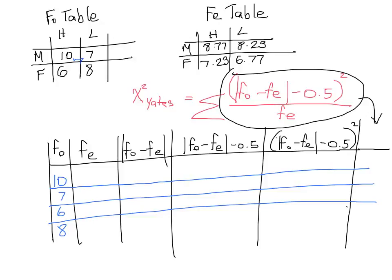So we went from the first box to the right and then back and then down. So 10, we have 8.77 that matches it, then 8.23, then 7.23, and 6.77.